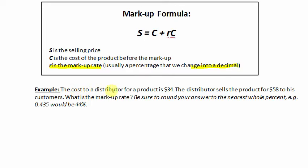The cost to a distributor for a product is $34. The distributor sells the product for $58 to his customers. What is the markup rate? Be sure to round your answer to the nearest whole percent.